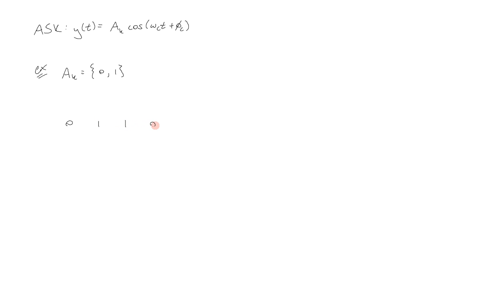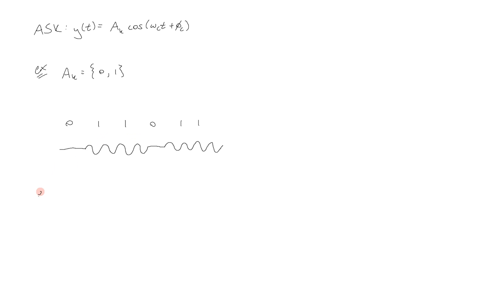So to transmit the message 0, 1, 1, 0, 1, 1, we're going to have an amplitude of 0 for the first bit, then amplitude of 1, amplitude of 1, amplitude of 0, then again amplitude of 1, amplitude of 1, and so on in this kind of fashion. We can also encode more than one bit at a time.